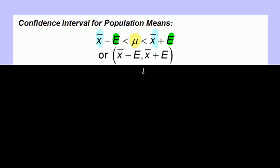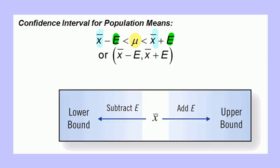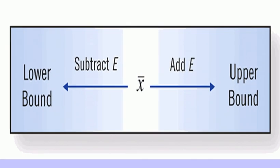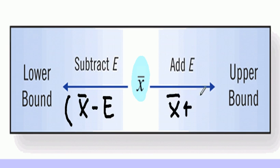Written in interval notation, x-bar minus E and x-bar plus E. What we're going to do is start with x-bar right here in the center. If you subtract the amount of wiggle room that you have, that's the lower bound. If you take the x-bar and you add the amount of wiggle room...